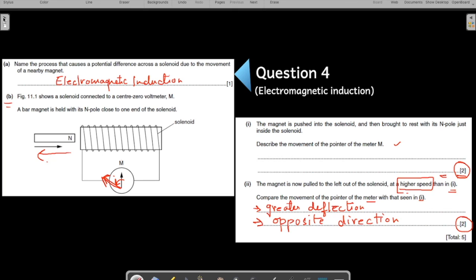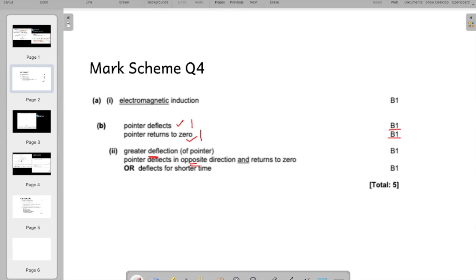Now refer the mark scheme to verify if your answer is correct. Greater deflection and that too in the opposite direction. Both the points will fit you one mark each. And then you'll score full marks in this question. Two by two.